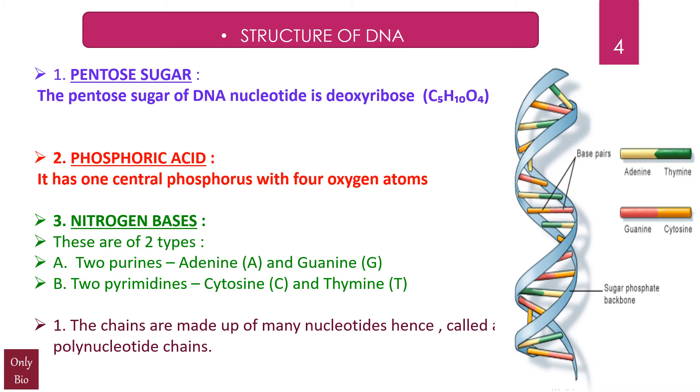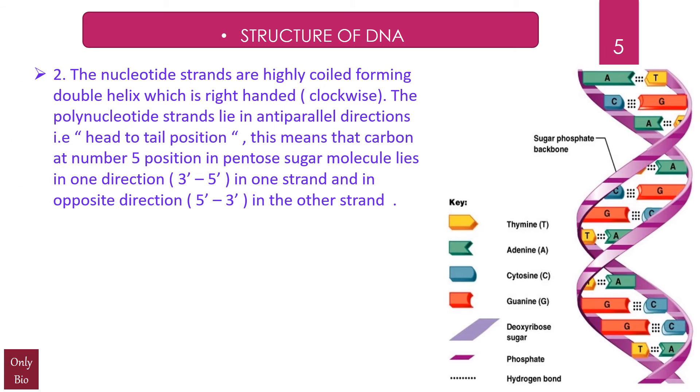The chains are made up of many nucleotides, and hence it is called a polynucleotide chain. The polynucleotide strands are highly coiled, forming a double helix which is right-handed, that is clockwise. You can see this clockwise, right-side direction. The polynucleotide strands lie in anti-parallel direction, that is head-to-tail position. This means that carbon at number 5 position in pentose sugar molecule lies in one direction, 3' to 5' in one strand, and in opposite direction in the other strand.